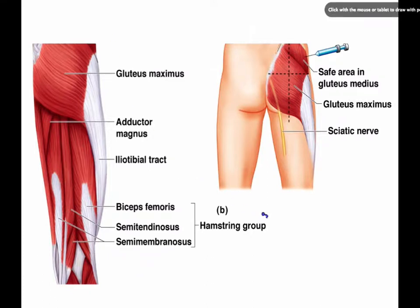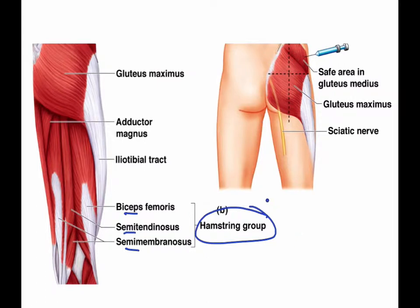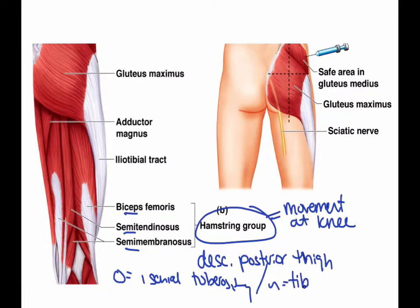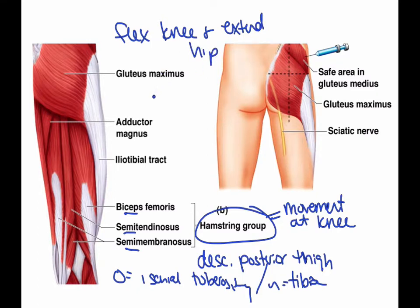Let's go ahead and do the hamstrings. There are three different hamstrings and we're just going to go through the entire group. The hamstring group deals with movement at the knee. The description is that they're located in the posterior thigh. The origin is the ischial tuberosity, the insertion is the tibia, and the action is to flex the knee and extend the hip. It also deals with thigh extension.